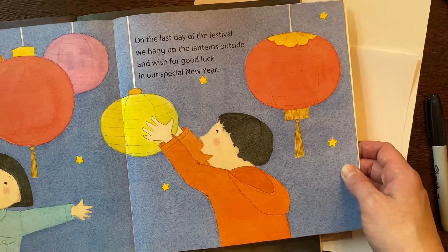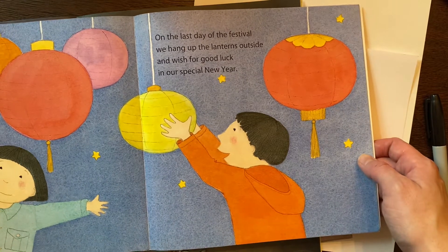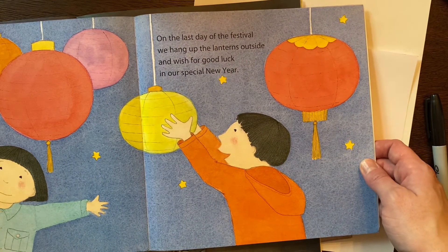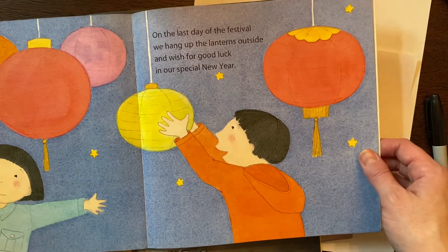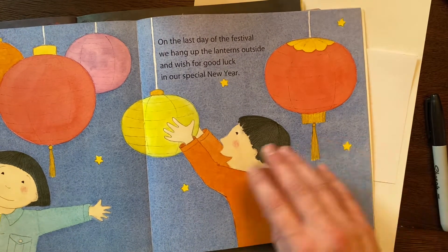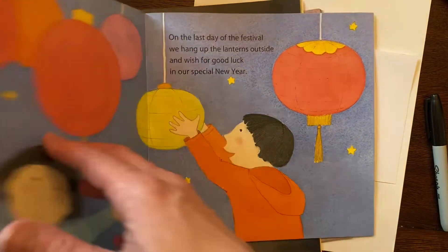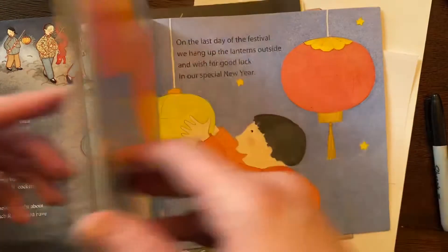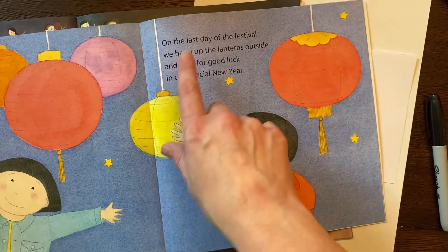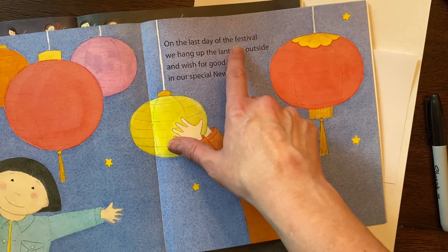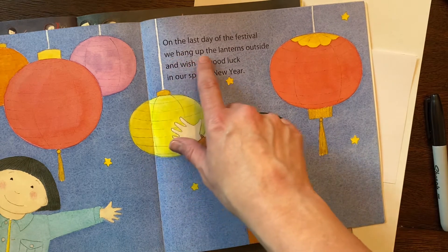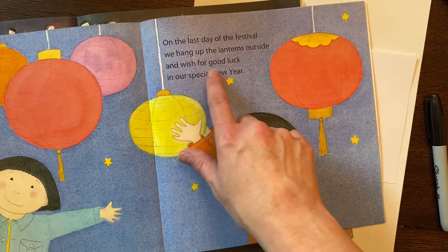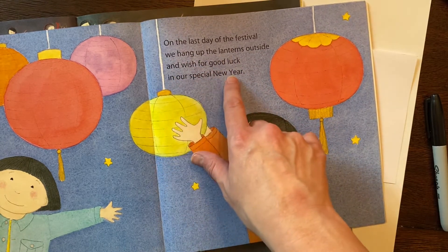Hello! So we are going to be doing some drawings of lanterns today. I'm going to show you two different ways that I'm going to do my lantern drawing and I want to show you some images out of some books I have. Now this one is talking about Chinese New Year and on the last day of the festival, which is 15 days long, we hang up the lanterns outside and wish for good luck in our special new year.